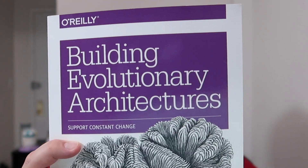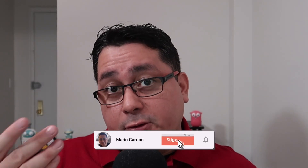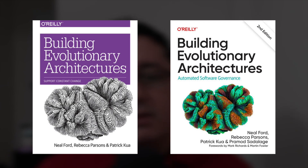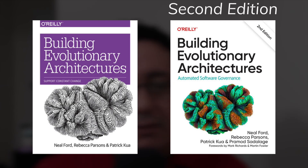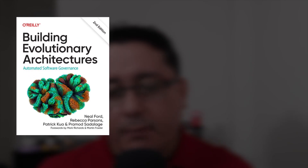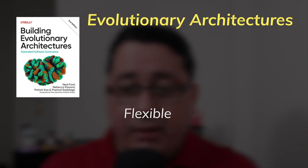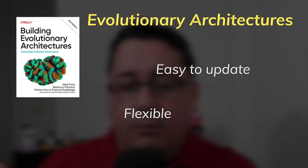Next we have Building Evolutionary Architectures, written by Neil Ford, Rebecca Persson, and Patrick Kua. There are two editions of this book. The one I just showed you was published in November 2017. However, there is a recent one, the second edition, published last year in December 2022. Both are published by O'Reilly. I recommend you get the second edition because it's the most recent one and has a few extra additions. This book introduces the concept of evolutionary architectures, which in short means building architectures that are flexible and easy to update without too much hassle. It doesn't teach a concrete architecture style.